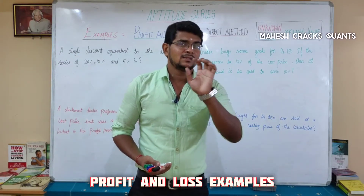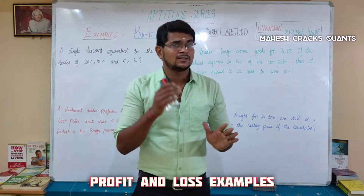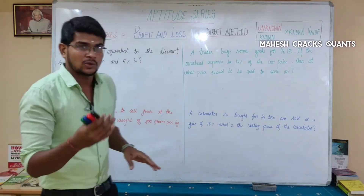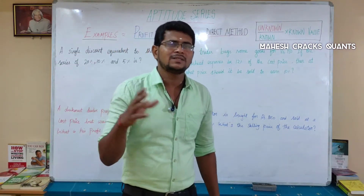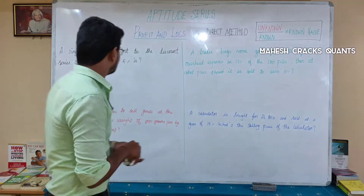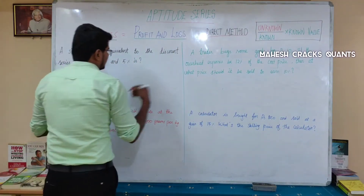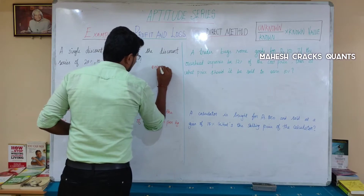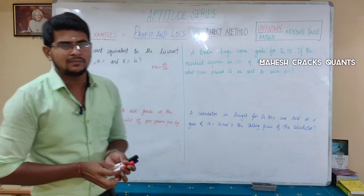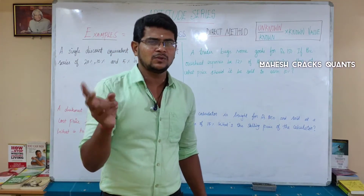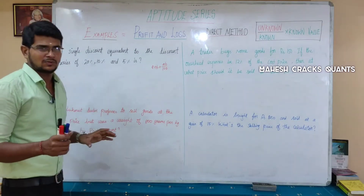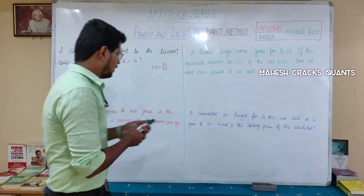The discounts are 20%, 10%, and 5%. The problem will use the successive formula. The successive formula is A plus B plus AB divided by 100. We will solve two values at a time, then incorporate the third value.